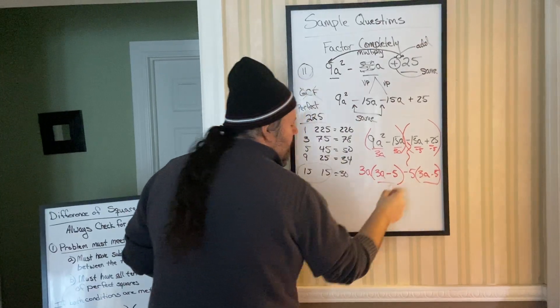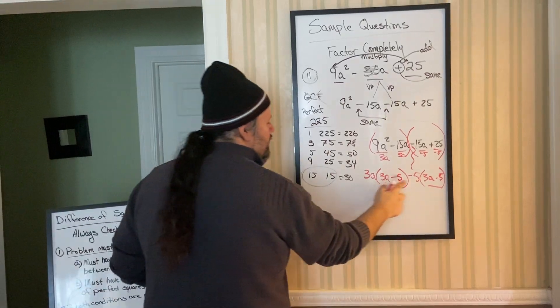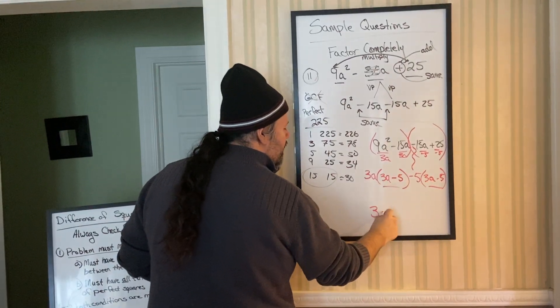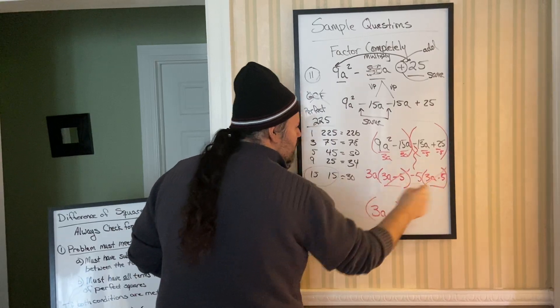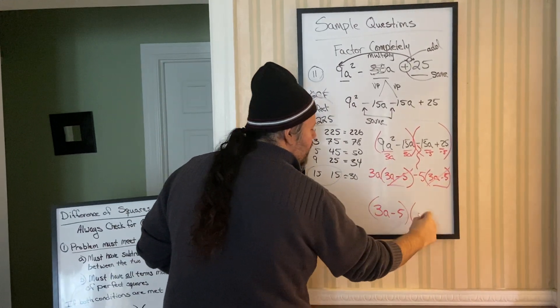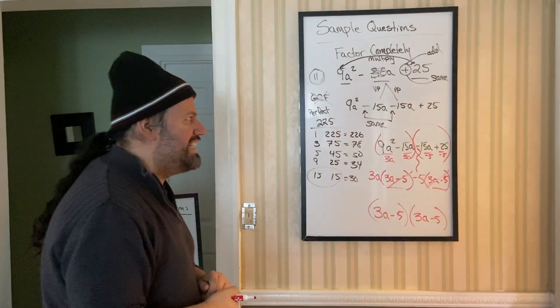See how the parentheses match? They must match because you found the combo. So these matching parentheses become one. And notice my leftovers, 3A minus 5, become the other.